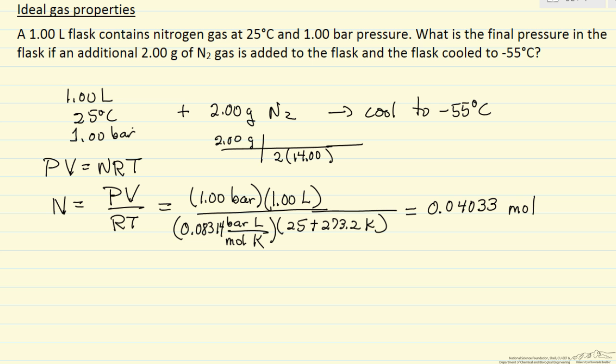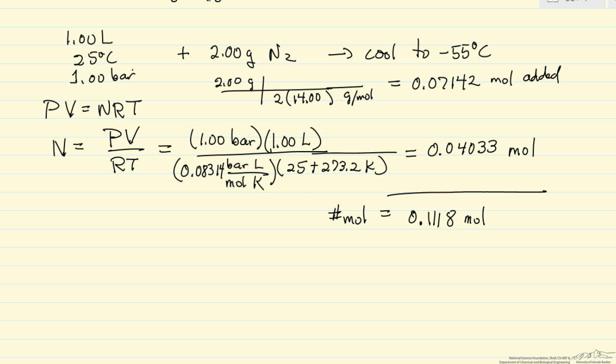So this is grams per mole. So we can calculate the number of moles added, so the number of moles finally is the sum of these two numbers. And now we need to calculate the final pressure if we cool this down. So the final pressure, number of moles final RT, temperature 2.